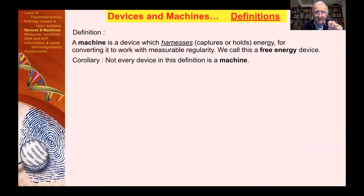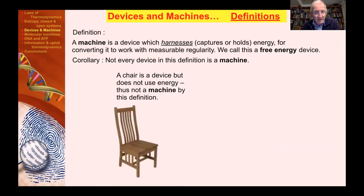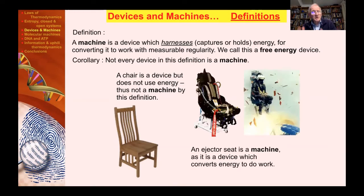You've got to set the free energy raised to begin with. Then that's released in order to enable it to do work. We need to define then a machine, and I'm going to do this by saying it's a device which harnesses or captures or holds the energy in some way, converting it to work with measurable regularity. We call that a free energy device. In my illustration here, a chair, though it's a very useful device, is not a machine because it's not using energy. But an ejector seat is a machine as it is a device which converts energy to do work.